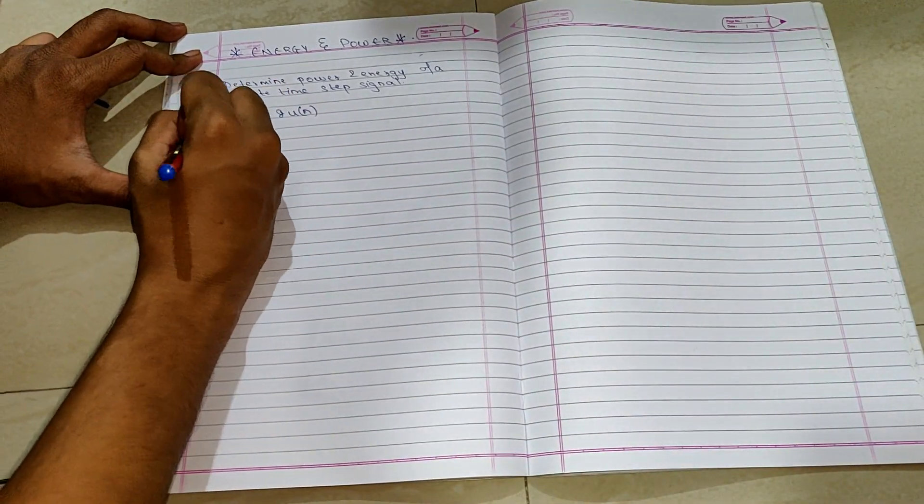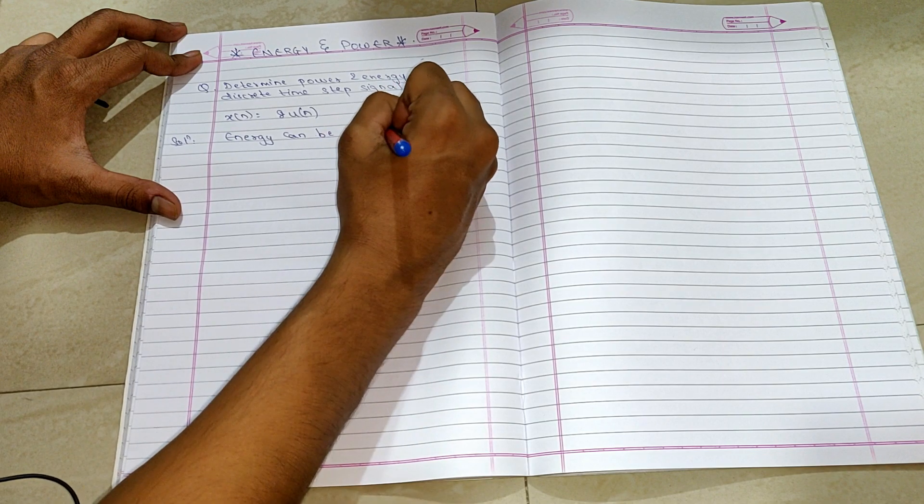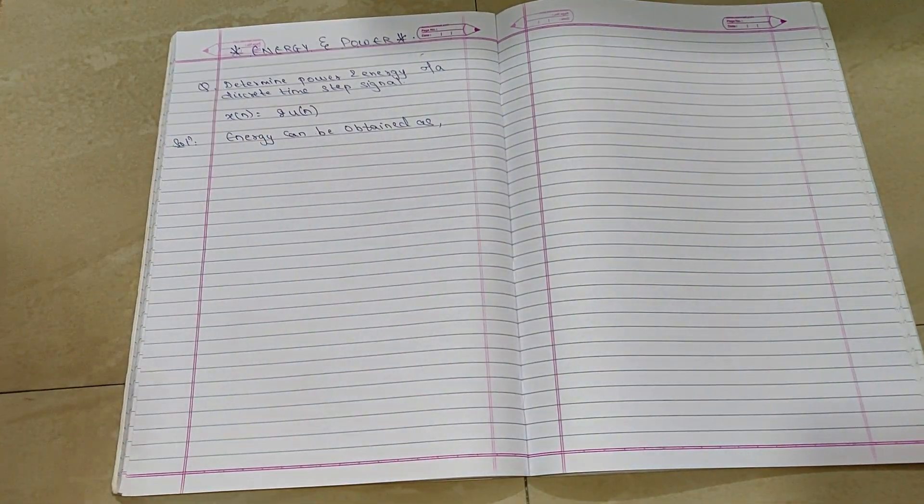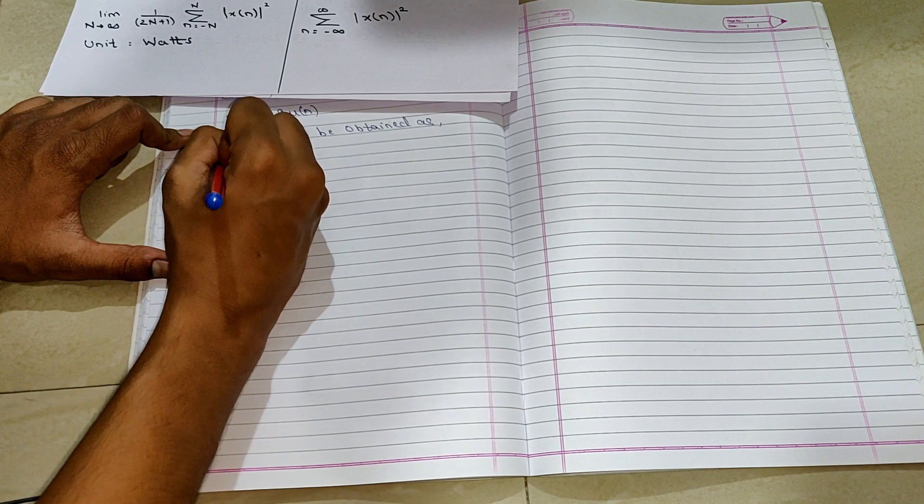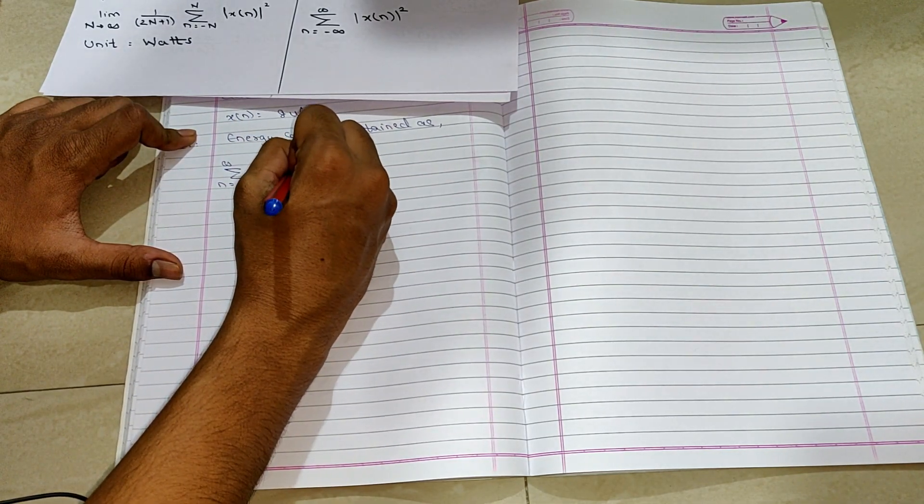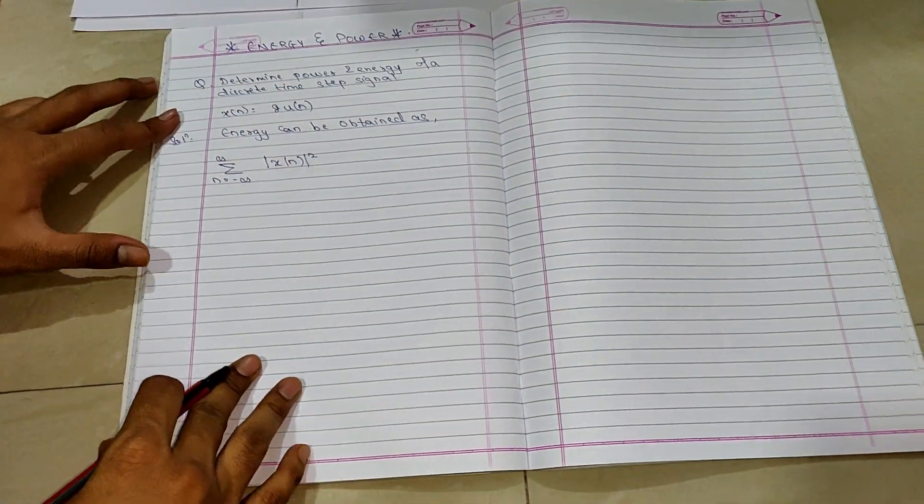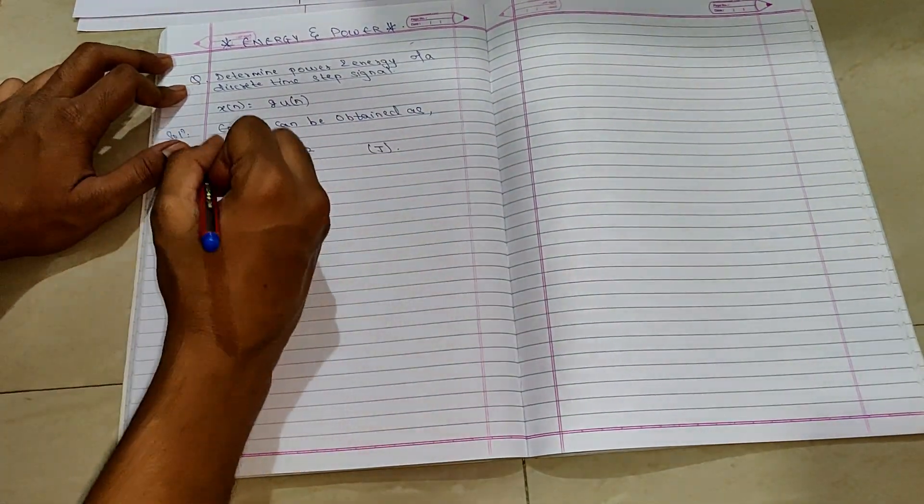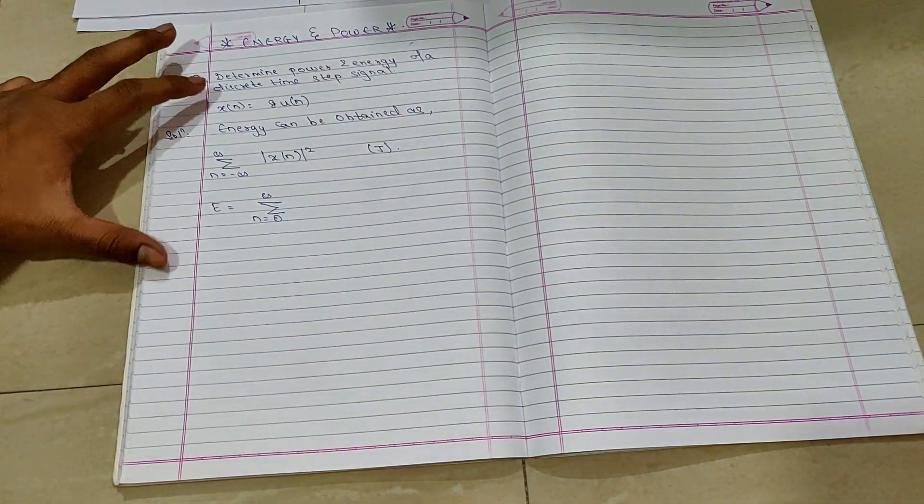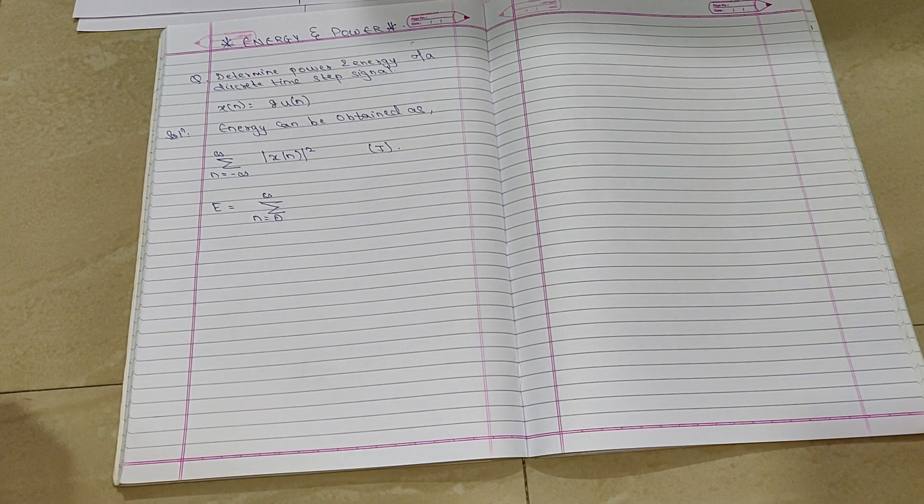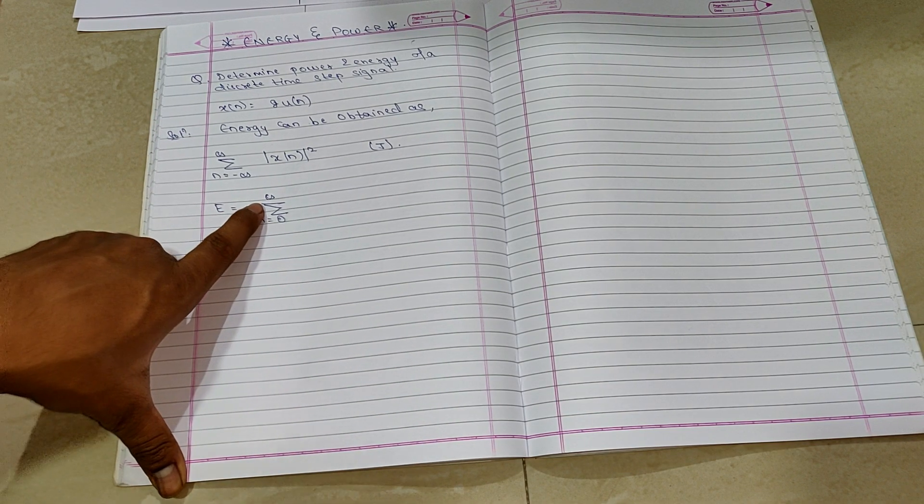Energy can be obtained as, so the formula for energy is given as summation of n is minus infinity to plus infinity, x of n, the whole square, mod x of n in joules. So the energy becomes summation of n equals 0 to infinity. So it is mentioned that it is a unit step signal. So unit step signal is always from 0 to infinity. So the lower limit becomes 0 and the upper limit becomes infinity.